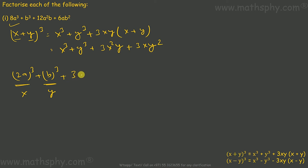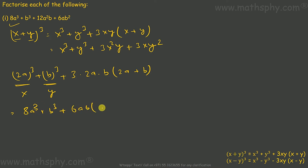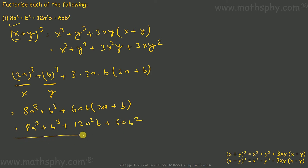If I take 3 into 2a into b, and then 2a plus b in the bracket, let's see what comes back. It gives me 8a cube plus b cube plus 6ab times 2a plus b, which comes to 8a cube plus b cube plus 12a squared b plus 6ab squared. This and this entire polynomial are the same, so this can be written as 2a plus b whole cube.